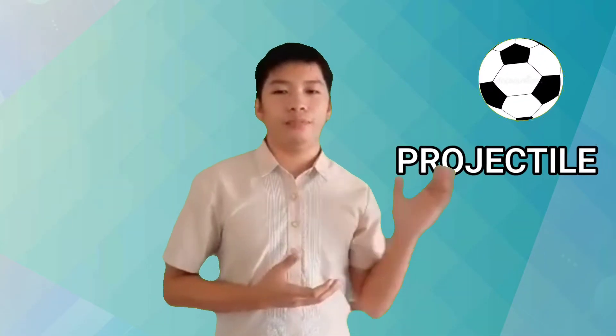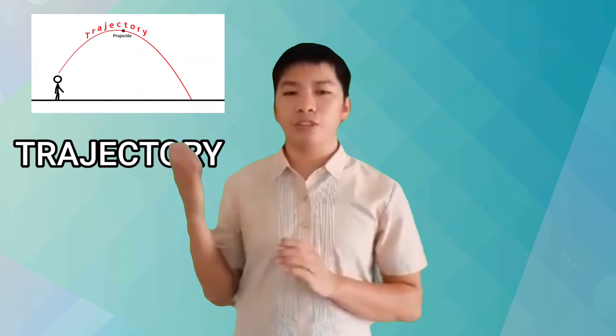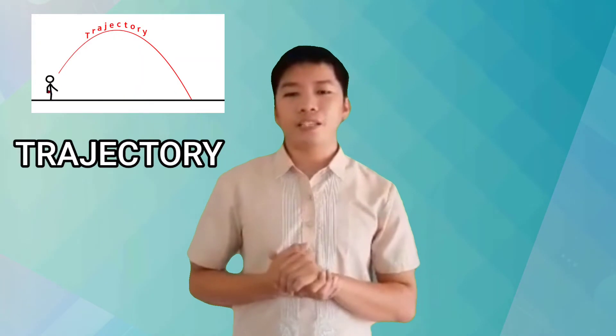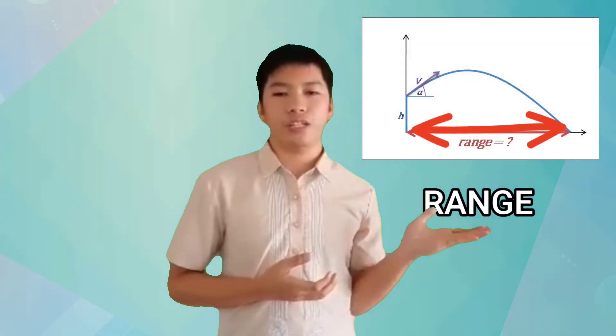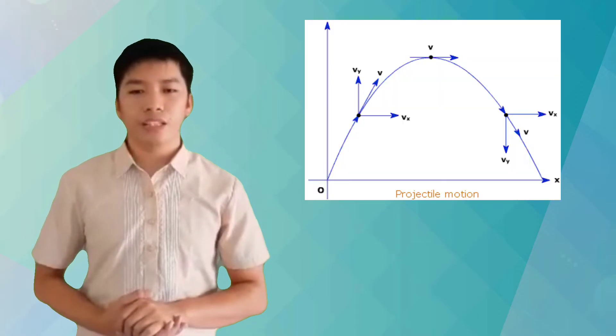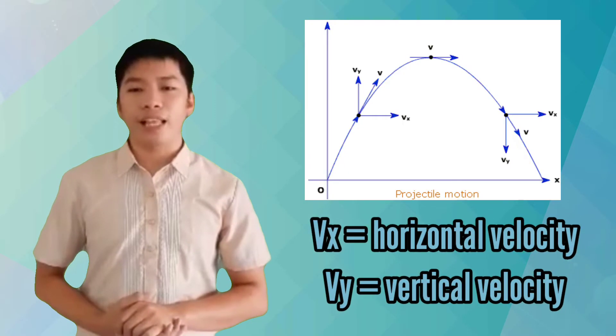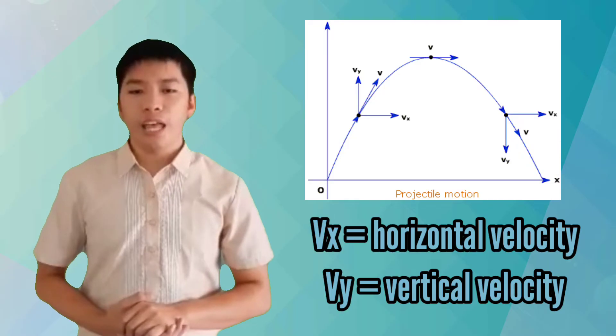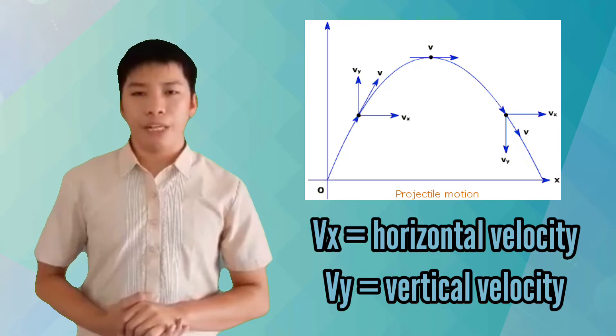The moving body is called a projectile. The curved path it travels is known as the trajectory, and the horizontal distance it covers is called the range. The horizontal and vertical motions of a projectile are completely independent of each other. Therefore, horizontal and vertical motion can be treated separately.